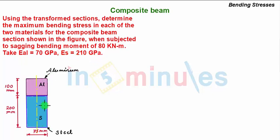So we have this composite beam section in which the steel section S is of dimension 75 mm width and 200 mm depth, upon which there is another aluminium section whose dimensions are width equal to 75 mm and depth equal to 100 mm.